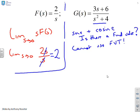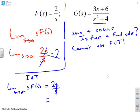What about the initial value theorem? For F(s) = 2/s, we have the limit as s goes to infinity of s·F(s), which again gives you 2s/s — the s's cancel and you get two. Straightforward for that one.